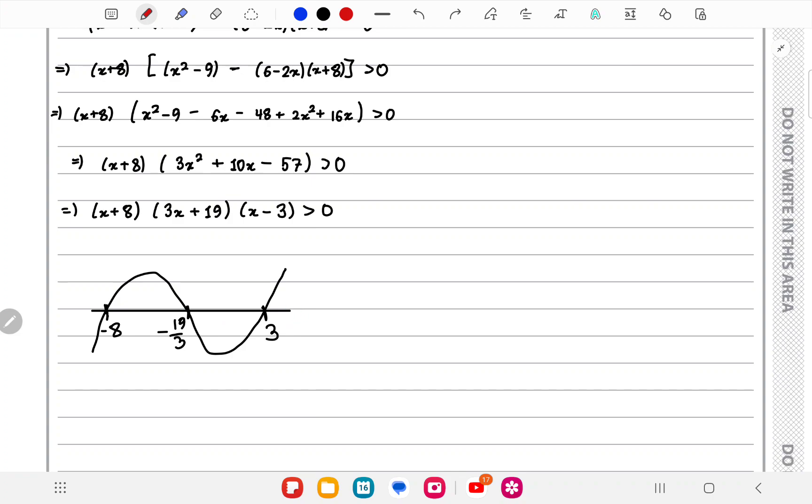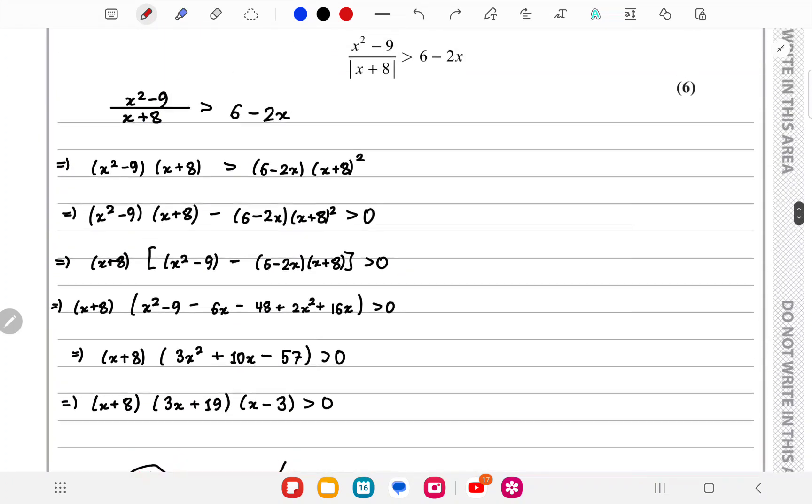We know we need greater than 0, so the portion of the graph above this horizontal line will be required, so it's this and this area over here, which is in the range -8 < x < -19/3 and x > 3. That's for the positive case.